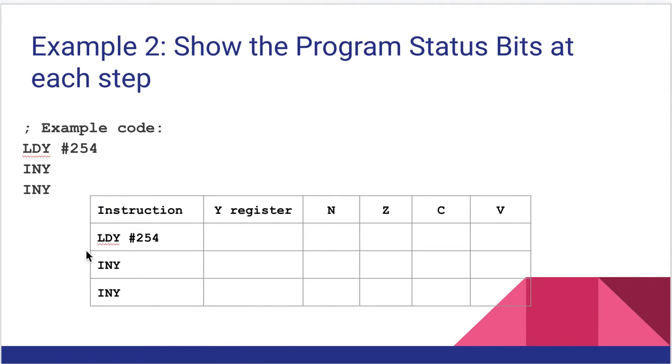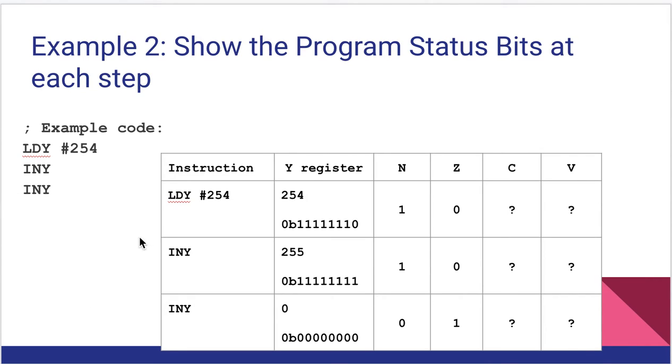Let's look at one that will do some more interesting stuff. Here, manipulating the Y register, I'm loading in 254. And recall that 255 is the largest value we can have in an 8-bit register. So we're pretty close to the wraparound point here. So I'm loading 254 into the Y register, then I'm incrementing Y twice. So let's see what happens.